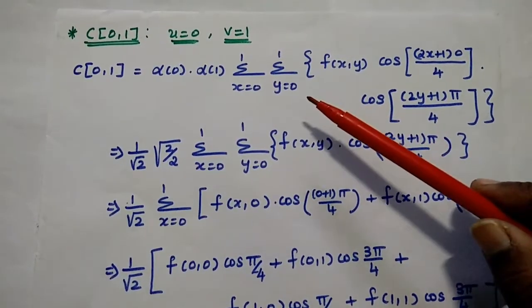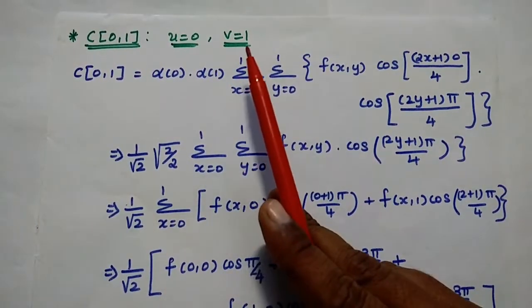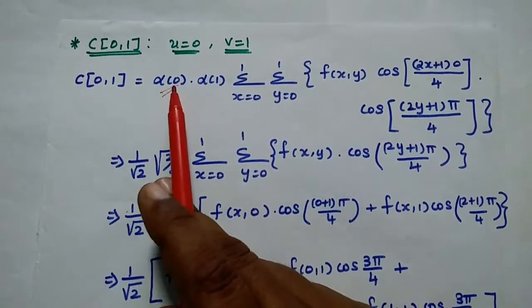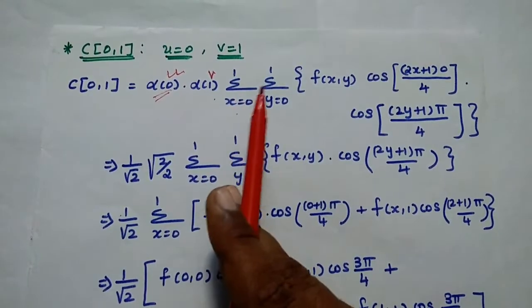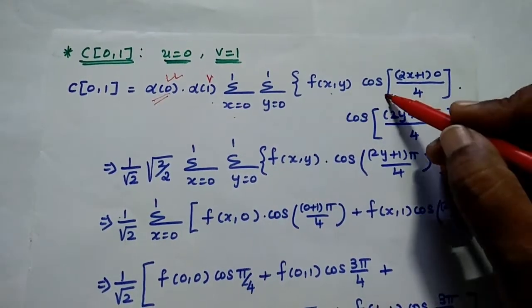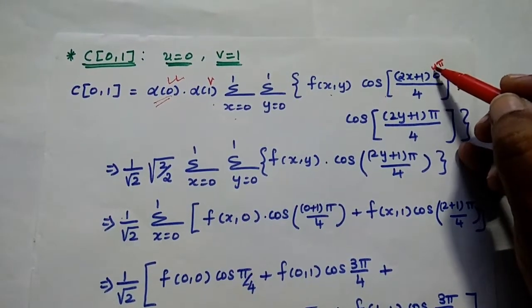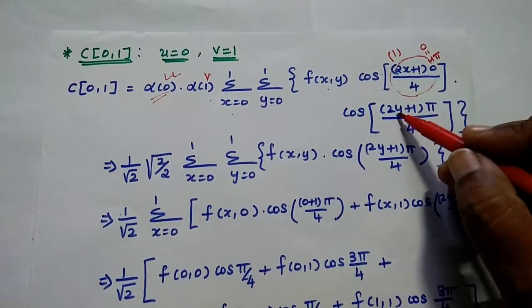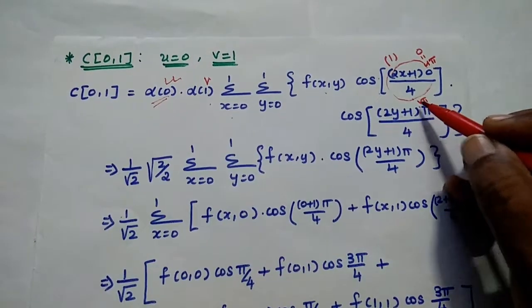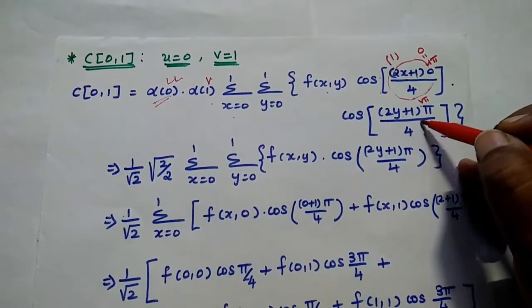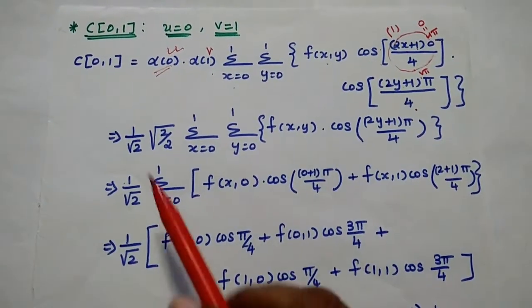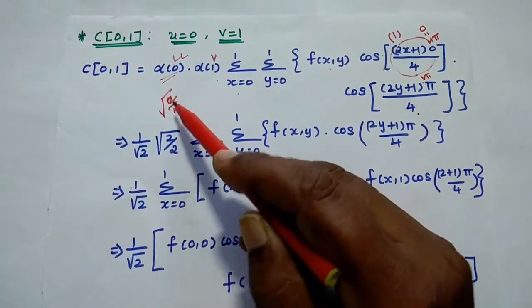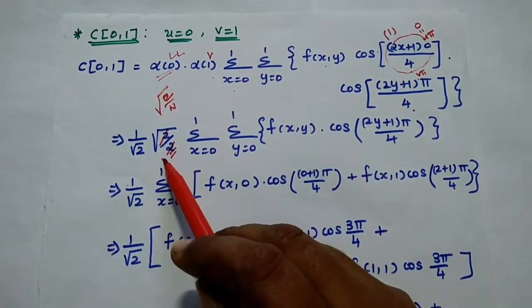Next we find C(0,1), where u=0 and v=1. Substituting into the formula: C(0,1) = α(0)·α(1) · Σ(x=0 to 1) Σ(y=0 to 1) f(x,y) · cos[(2x+1)·0·π/4] · cos[(2y+1)·π/4]. Since u=0, the first cosine term becomes cos(0)=1. The second cosine term is cos[(2y+1)π/4]. Substituting α(0)=1/√2 and α(1)=√(2/2)=1, we get: (1/√2) · Σ(x=0 to 1) Σ(y=0 to 1) f(x,y) · cos[(2y+1)π/4].